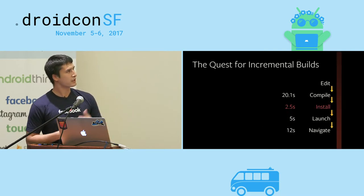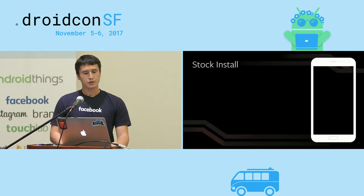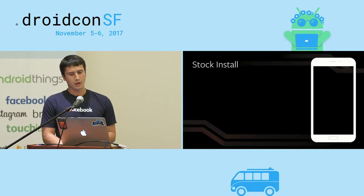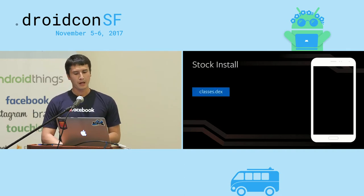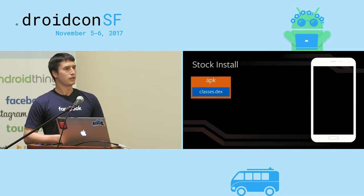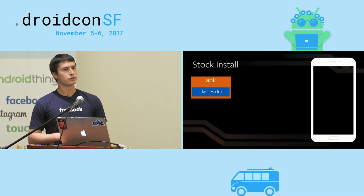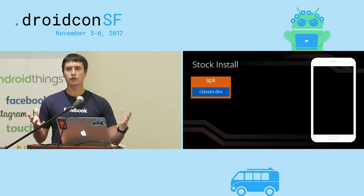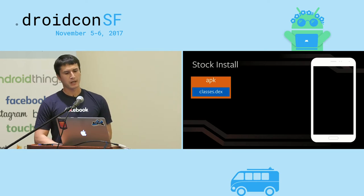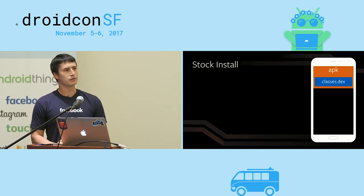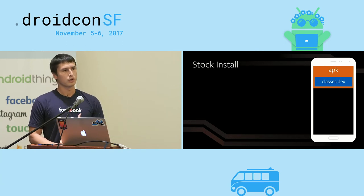Next, let's look at installation. In a stock install, you compile your code and it produces a classes.dex file. That gets packaged into an APK — but it's not the only thing. Your resources, native libs, assets, all the other bits and pieces of your app also get packaged into this APK. When we push it over to the device or emulator, we pay to push all of those bytes over ADB, even if the only thing that changed is our code.